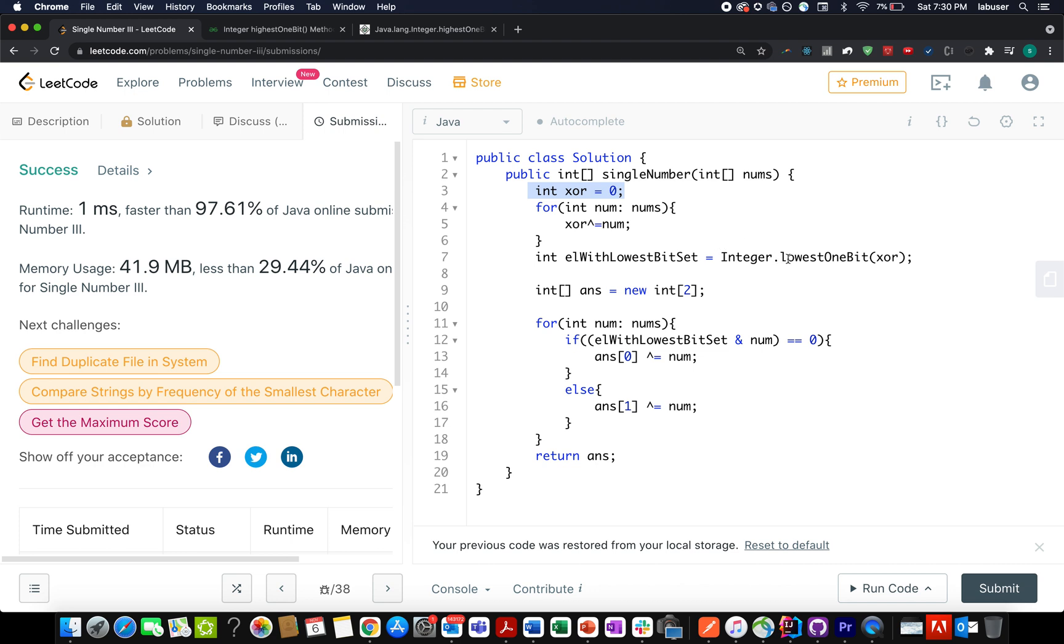Next, I go ahead and use an inbuilt method of Java library. I need to identify that element in which the lowest bit in the XOR element is set. So this will give me that particular element or index of that particular element where the lowest bit was set. So I have stored it in a variable.